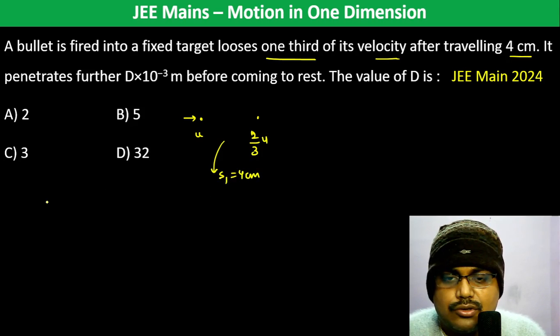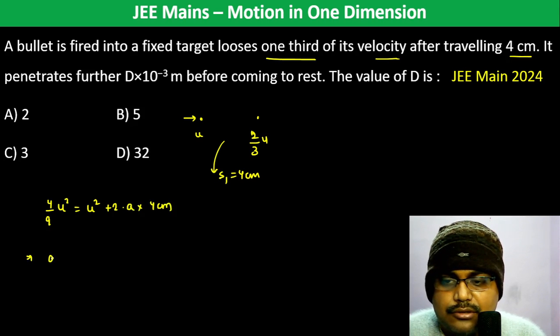So 4/9 u² is equal to u² plus 2 into a into 4 centimeters. This gives us 5/9 u² by 2 into 4 centimeters, which is minus.